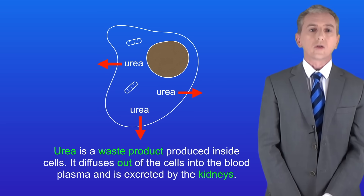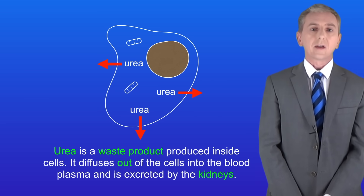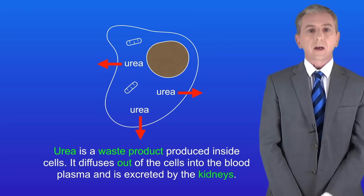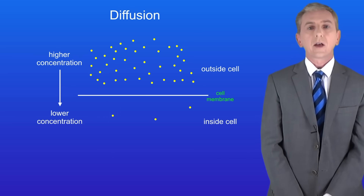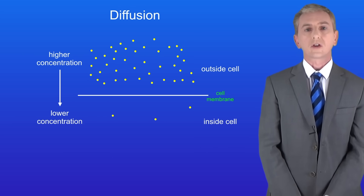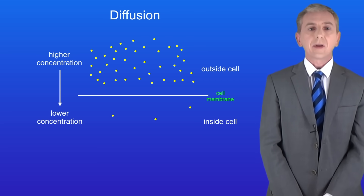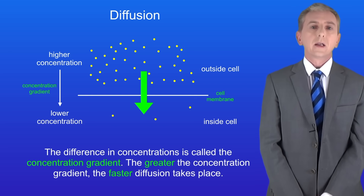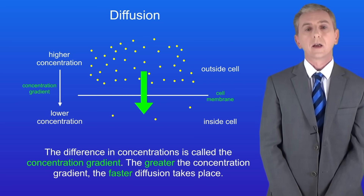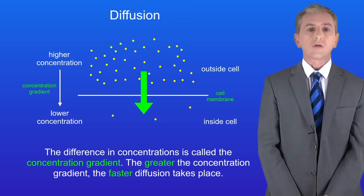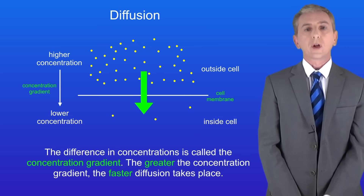The rate of diffusion is affected by three main factors. The first factor is the difference in concentrations. We can see a molecule on the outside and the inside of a cell, with a higher concentration outside than inside, so the molecules diffuse into the cell. Scientists call this difference in concentration the concentration gradient. The greater the concentration gradient, the faster diffusion takes place, so in this example diffusion will be fast.